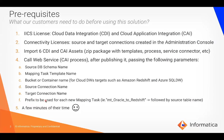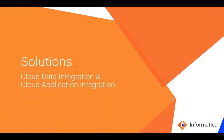You also need the target connection name and the prefix to be used for each new mapping task. Bear in mind that each source table is going to have one task, and the prefix you provide here is going to be used for each of these tasks.